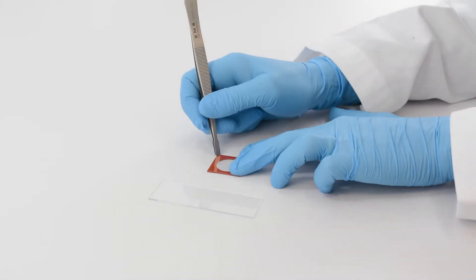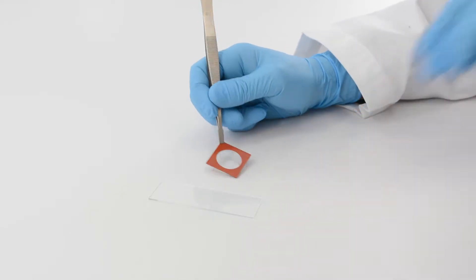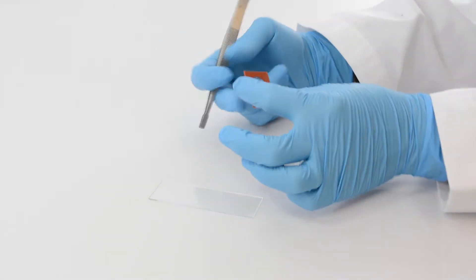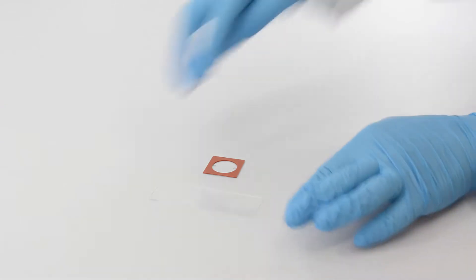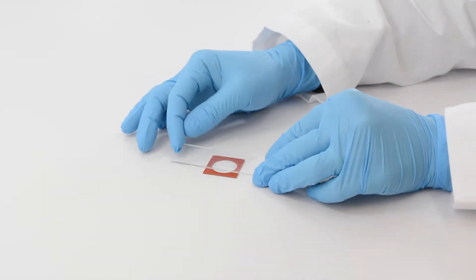To create a chamber, remove the liner from the seal. With the adhesive side up, place the slide over the chamber and press down firmly.